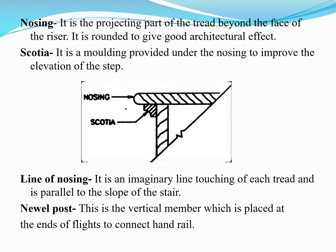Nosing is the portion of the tread that is slightly projected beyond the riser. That extra projected portion is called nosing, which is provided for architectural effect. The portion supported beside the nosing is called the scotia, which improves the elevation of each step. The line of nosing is an imaginary straight line touching each nosing of every step, and this line is always parallel to the slope of your step.